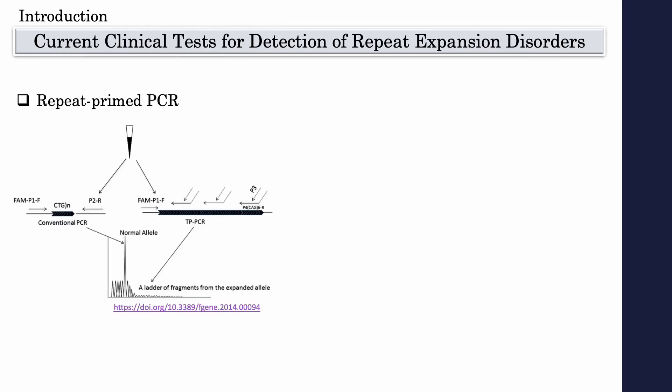The nature of the repeat sequence makes it impossible to perform standard PCR, and so repeat-primed PCR was developed for each known pathogenic repetitive gene. RP-PCR uses primers that anneal to the repeat sequence to obtain multiple products correlating with the repeat size, providing better amplification of the repeat.